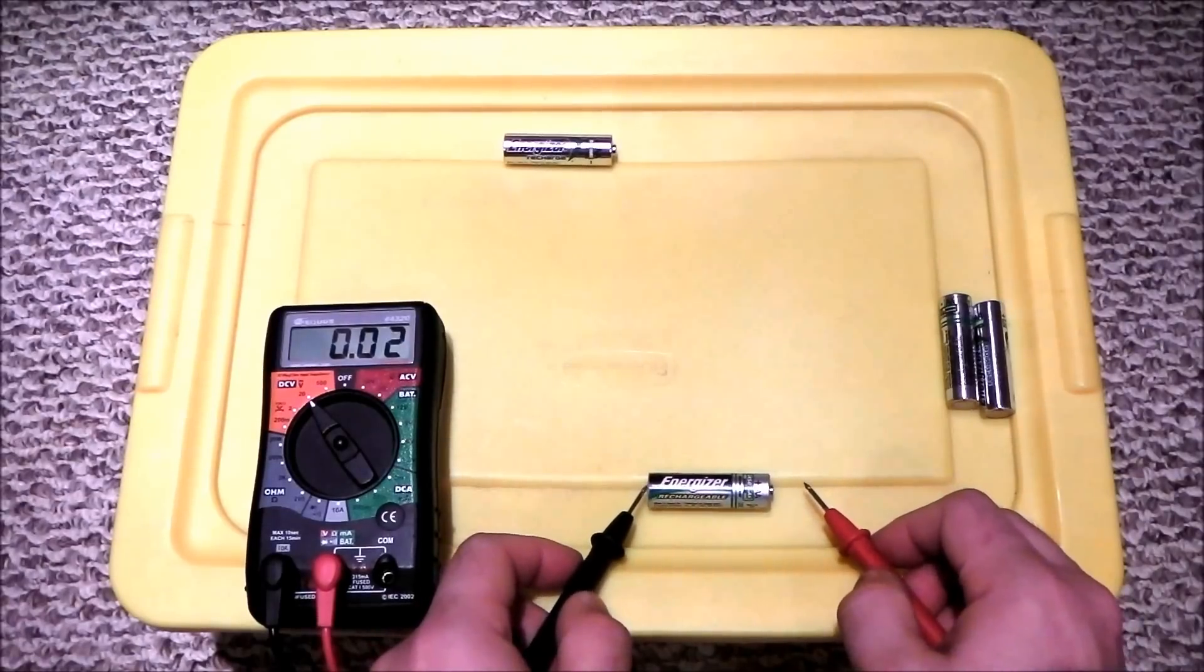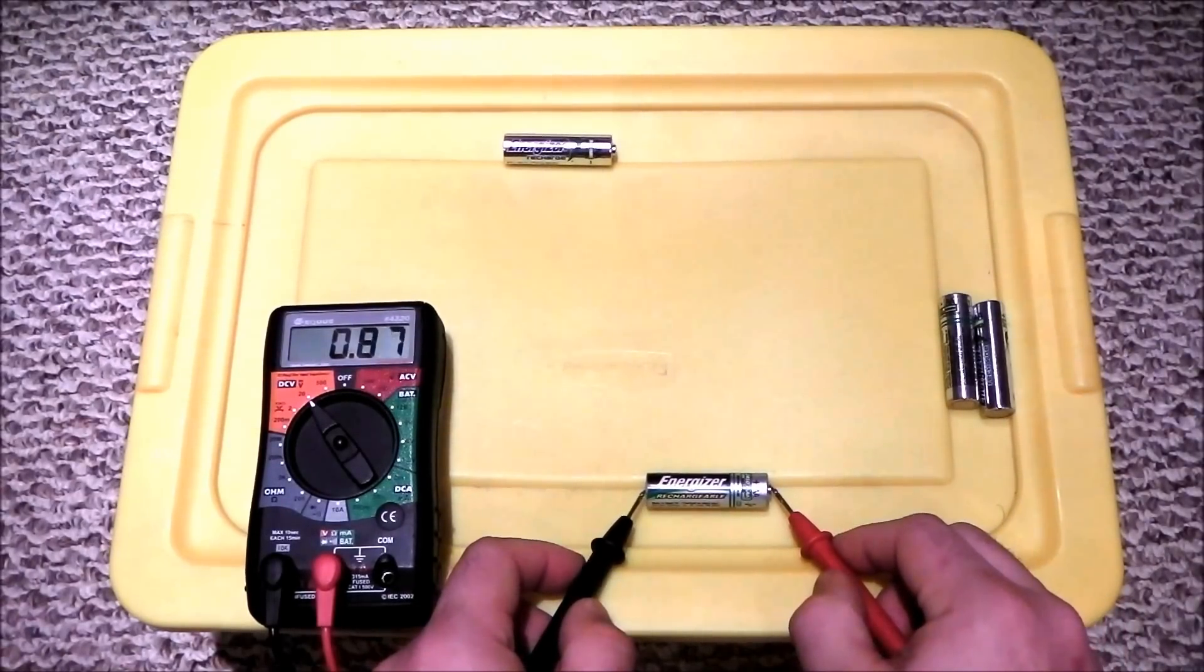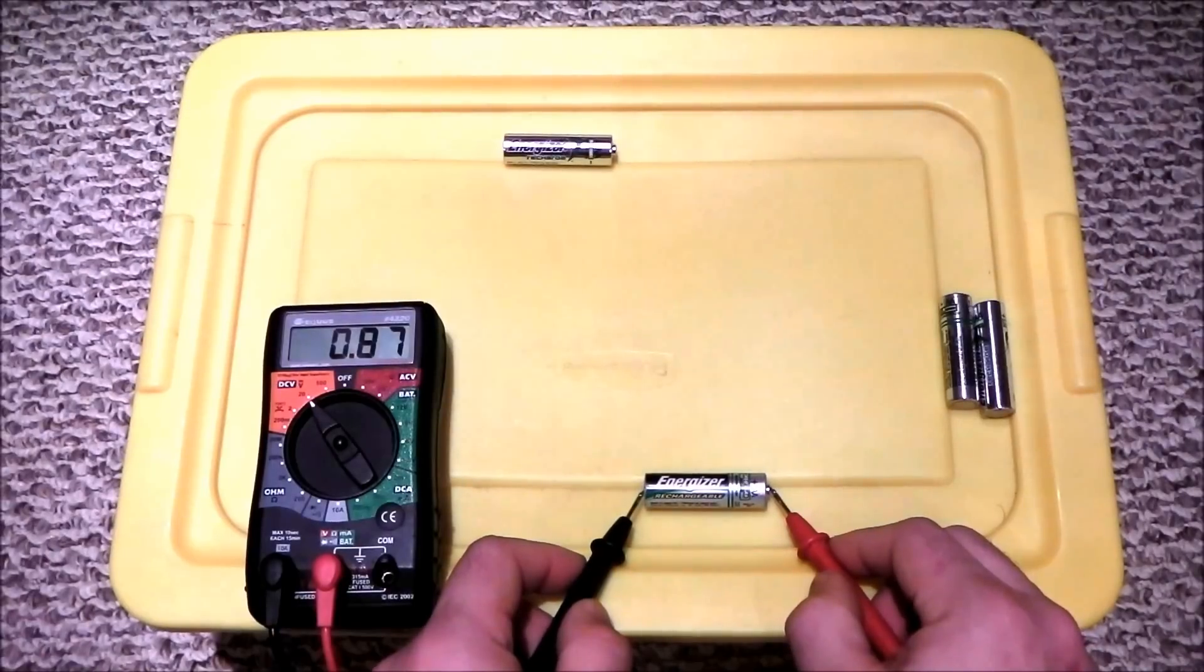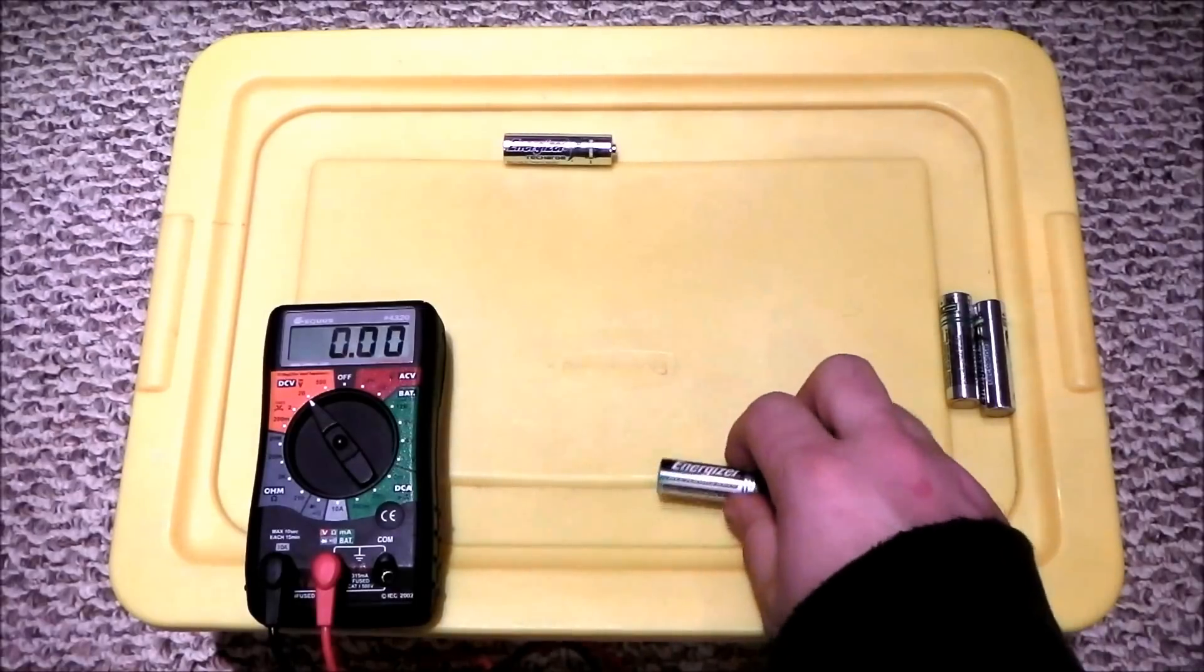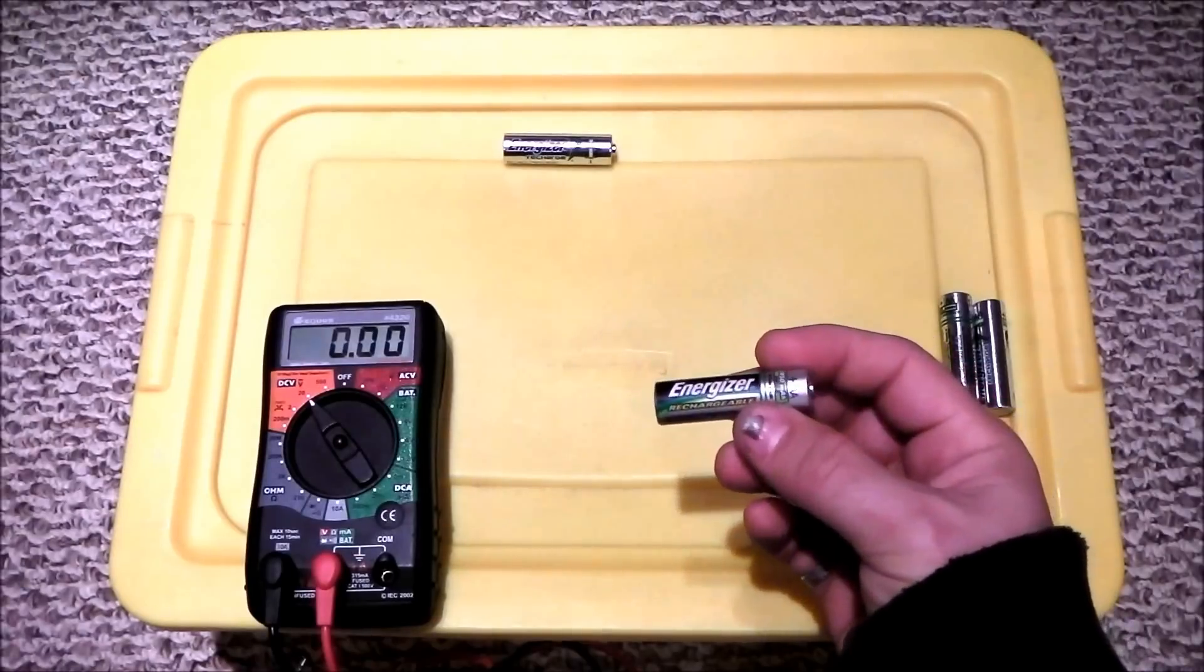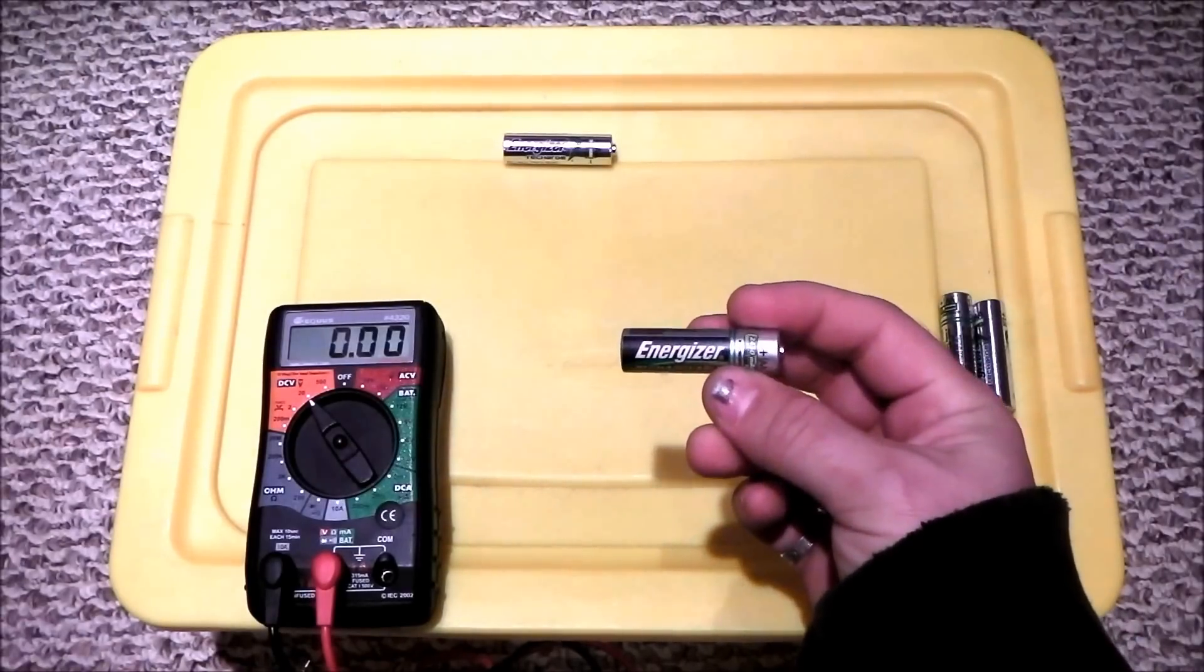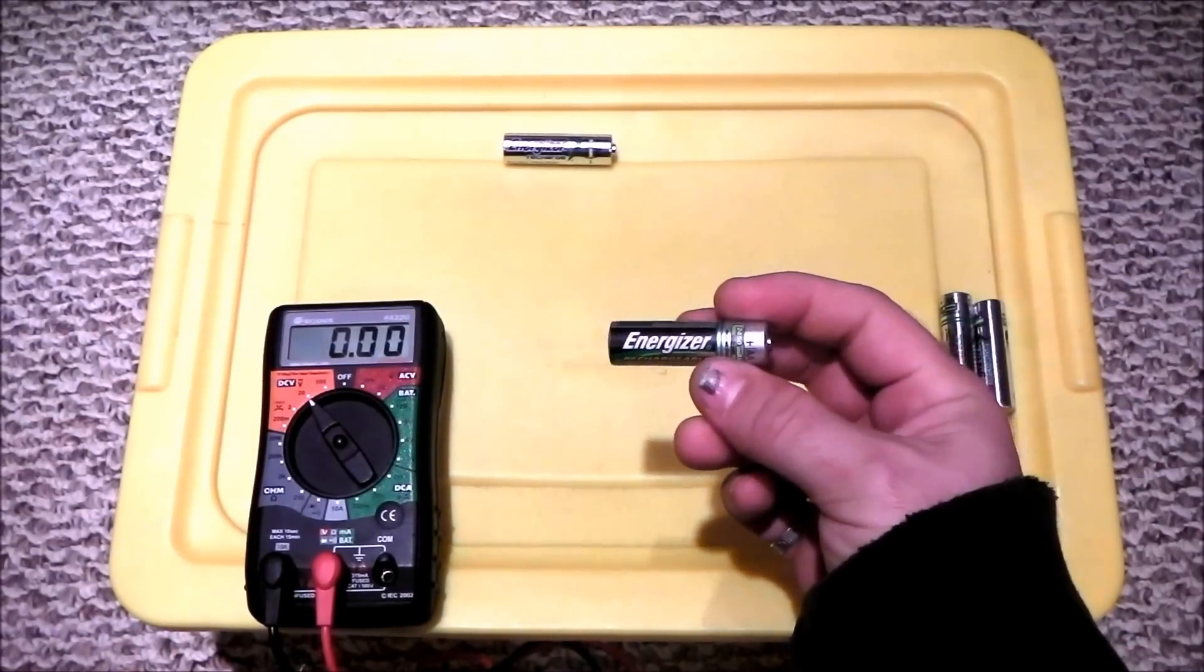So basically we're putting our negative lead onto the negative side of the battery, positive lead onto the positive side of the battery, and this battery is only showing 0.87 volts. So that's well below the threshold that you want to be in. You want to be, like I said, at least 1.25 plus.